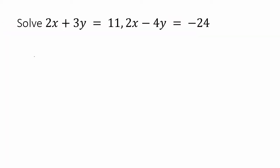First question: 2x plus 3y equals 11, and 2x minus 4y equals minus 24. This is equation number 1 and equation number 2.